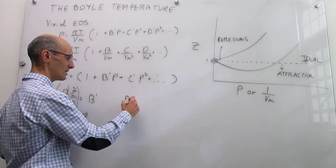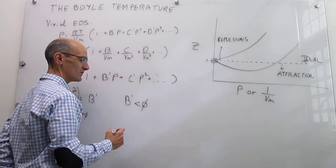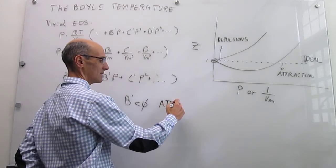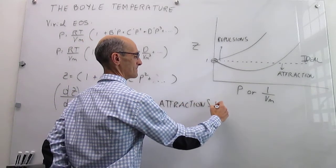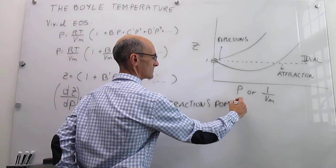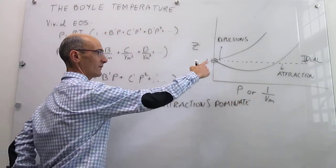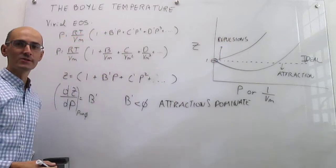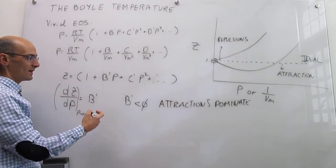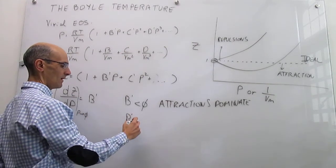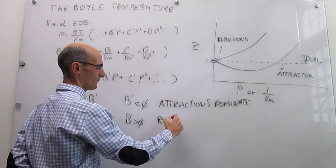So the idea is that when the B' constant is negative, we understand that attractions dominate the interactions between the gas particles. And in the other case where repulsions are always winning, that means that B' is larger than 0, and if that is the case, then repulsions win the day.